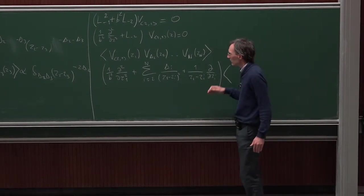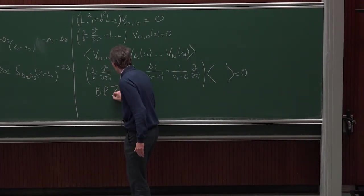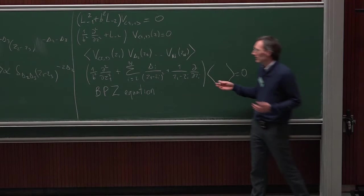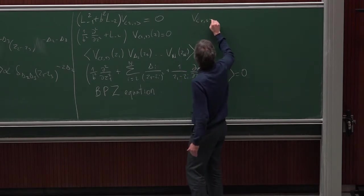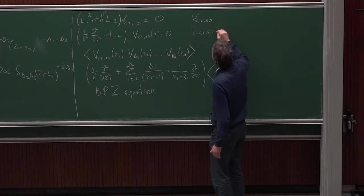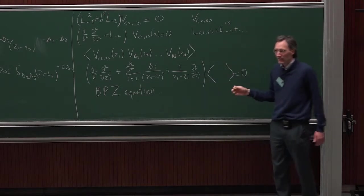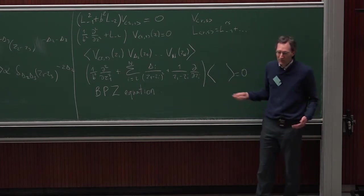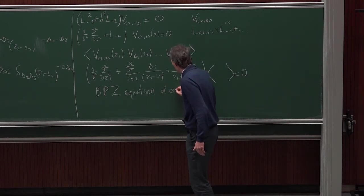That's a partial differential equation of order 2, called the Belavin-Polyakov-Zamolodchikov (BPZ) equation. If instead of a level-2 degenerate field we had a field Vᵣₛ, it is killed by an operator L_{r,s} = L₋₁^{rs} + …, and we would obtain a partial differential equation of order r·s — a higher-order BPZ equation. Here we have a BPZ equation of order 2.